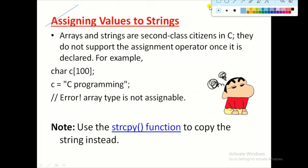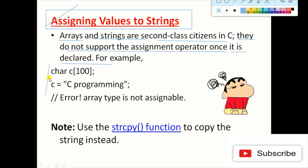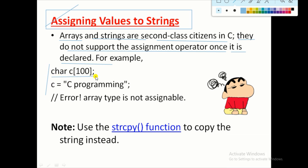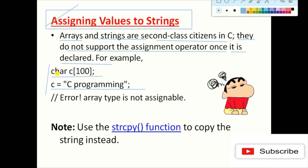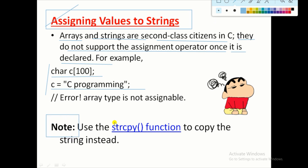Arrays and strings are second-class citizens in C — they do not support the assignment operator once declared. You have to remember: whenever you declare a string, you must assign its value at the same time; you cannot assign a value after initialization because it does not support the assignment operator. For example, declaring 'char c[100]' and then writing 'c = "c programming"' is not valid. Instead, use the 'strcpy' (string copy) function to copy a string into a declared string variable.